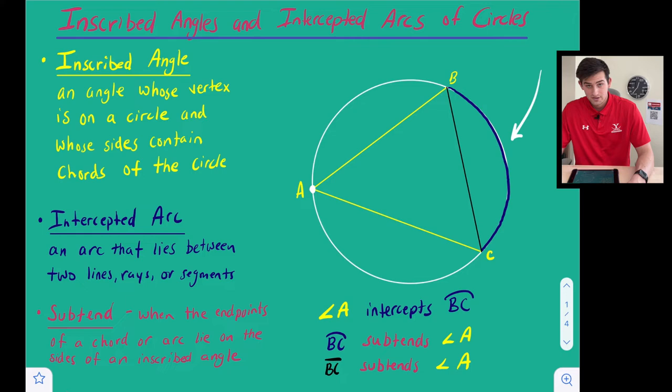So angle A intercepts arc BC, arc BC subtends angle A, and also chord BC subtends angle A.